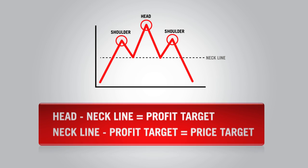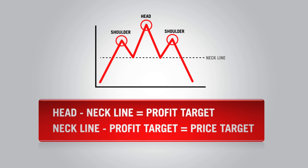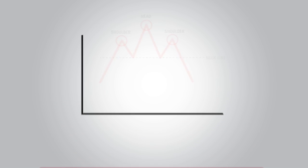To calculate a profit target, one needs to draw a line between the bottoms of the two shoulders, which is called a neckline. Then you subtract the head point from the neckline, and that equals the amount of pips for the profit target. This number is then subtracted from the neckline to get your price target.